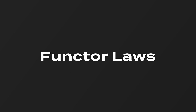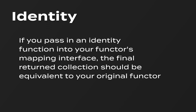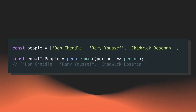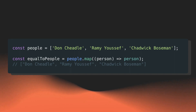So this is a prime example of a functor in action, but let's take a look at the functor laws so we can get a more technical understanding of what makes a functor a functor. There are two laws that a functor has to follow: the identity and composition laws. Let's take a closer look at the identity law first. It states that if you pass in an identity function into your functor's mapping interface, the final return collection should be equivalent to your original functor. Looking back at our last code block, I changed the callback method inside the map method so now I'm just returning the current person string. This callback is an identity function since it just returns the person string without changing its value.